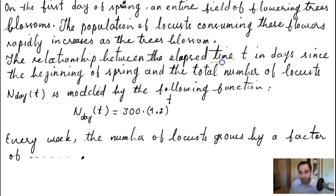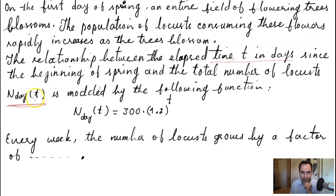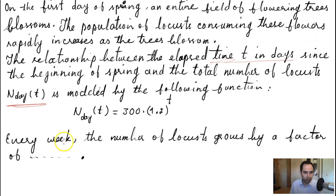The relationship is between time t in days since the beginning of spring and the total number of locusts. The function has been named n_day of t, and it is modeled by the following function: n_day(t) = 300 times 1.2 raised to the power t. The question we need to answer is: every week, the number of locusts grows by a factor of what?